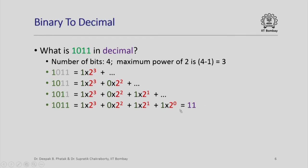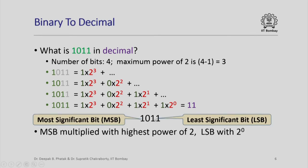Note that in the decimal representation of the number 11 I am also using the digits 1 and 1, and this is the binary representation of the same number 11 in which I am also using the numbers 1 and 0 — however these representations are very different. This is a base 10 decimal representation; this is a base 2 binary representation of the same number 11. In 1011, the bit associated with the highest power of 2 is called the most significant bit or MSB; the bit associated with the lowest power of 2, which is always 2 raised to 0, is called the least significant bit or LSB.